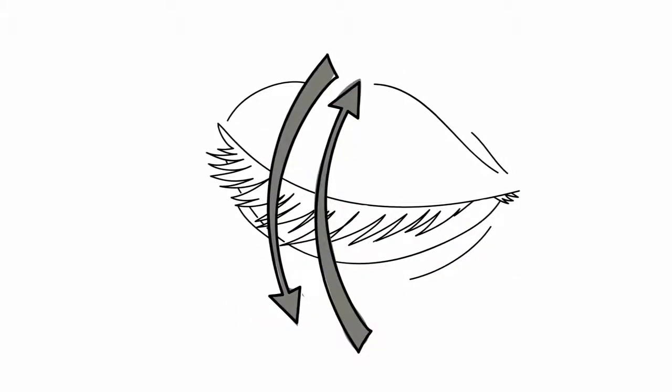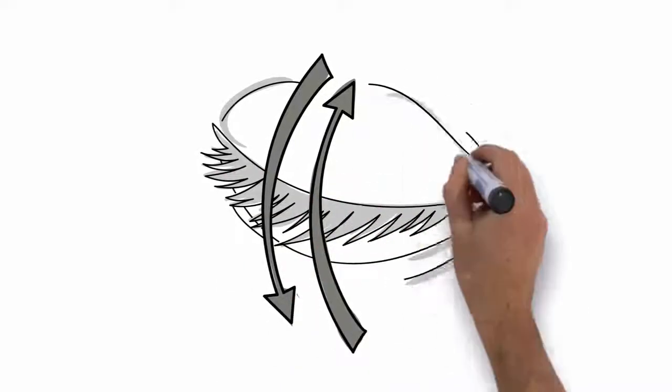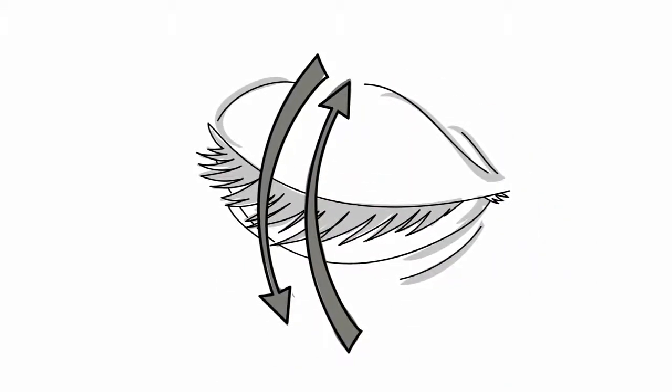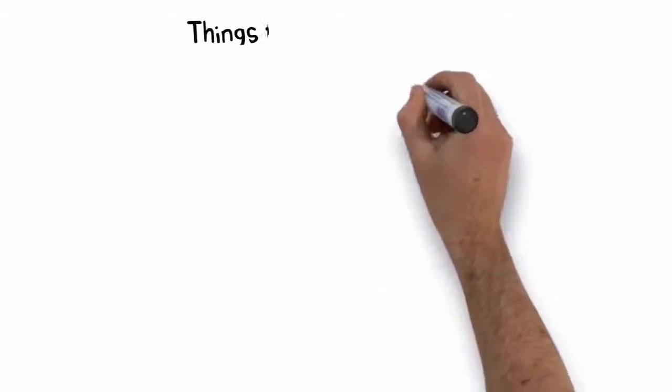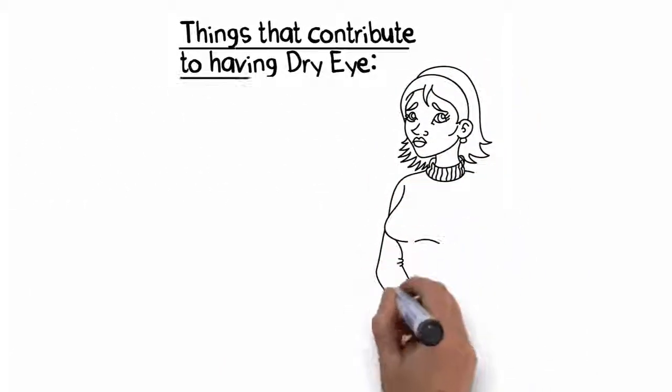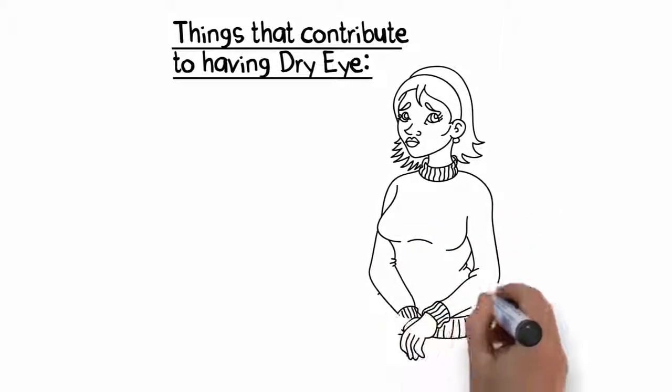But if tear or oil production or blinking slow down or stop altogether, your eyes feel dry. There are a lot of things that contribute to having dry eye. As you might guess, age is one of them.